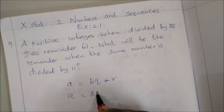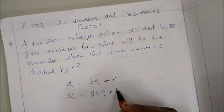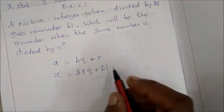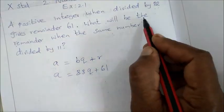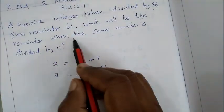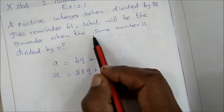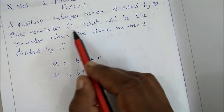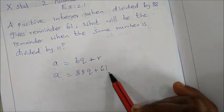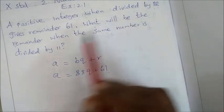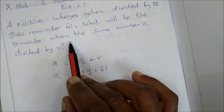The remainder when divided by 88 is 61. Then what will be the remainder when the same number is divided by 11? Okay, the positive number divided by... what will be the remainder?